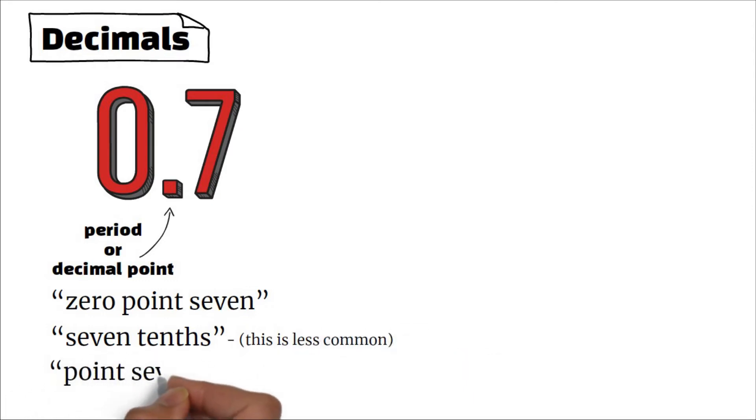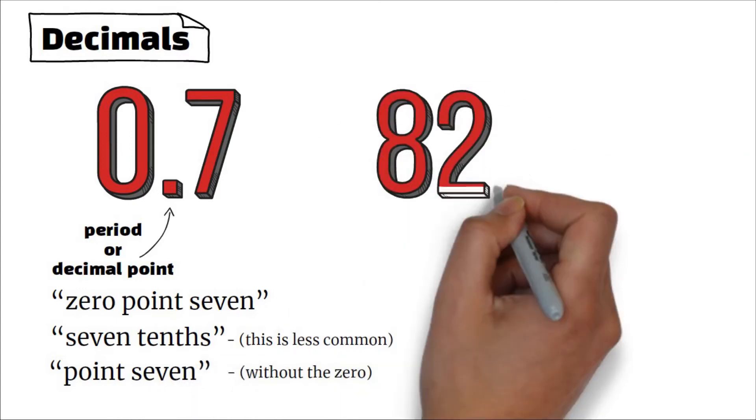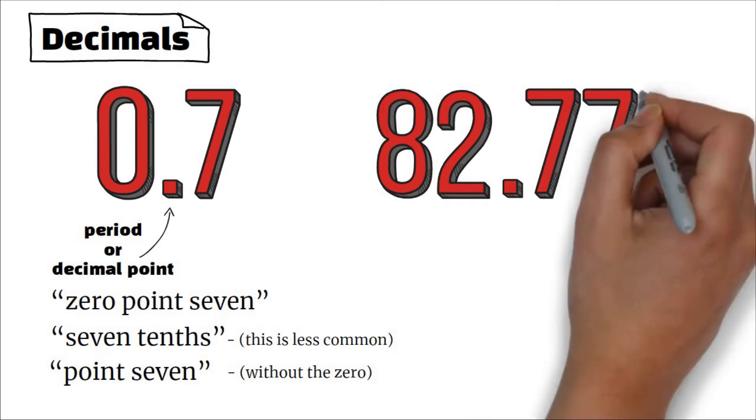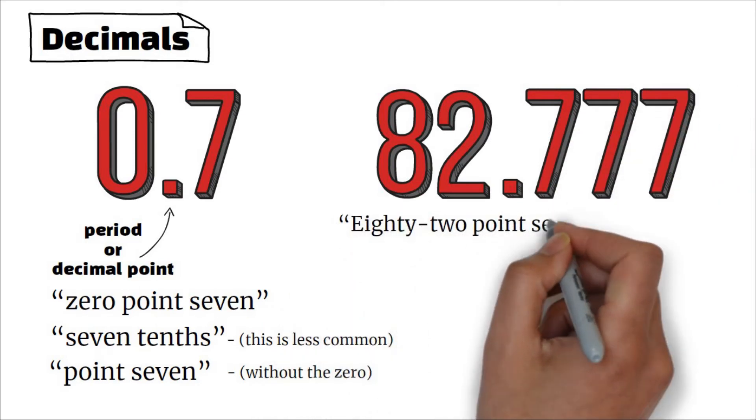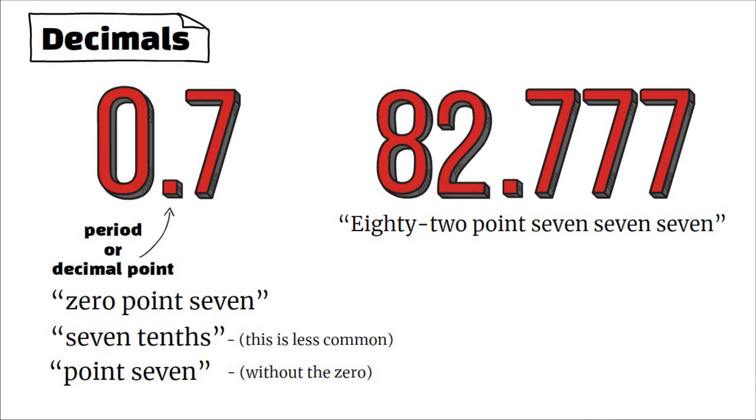If the decimal number is longer, like 82.777, then we say eighty-two point seven seven seven. We never say eighty-two point seven hundred seventy-seven—this would be incorrect.